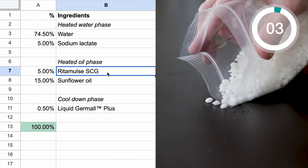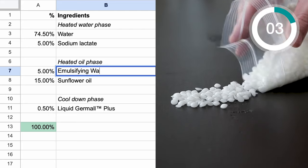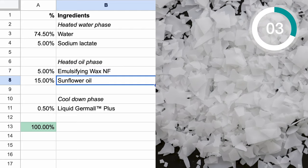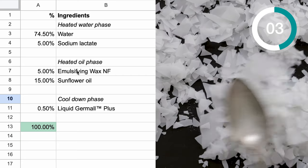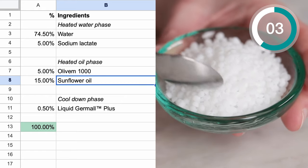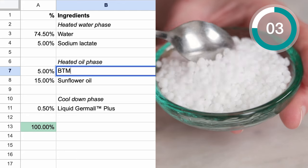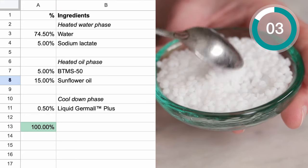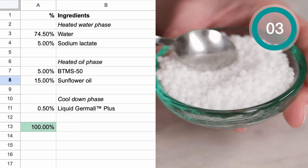This next change makes a lot of people nervous, but try a different emulsifying wax. I have found Emulsifying Wax NF, Olive M1000, Ritamulse SCG, Polawax, Montanov 68, BTMS 25, and BTMS 50 are generally pretty interchangeable on a one-for-one basis in most formulations. You will likely notice a change, but the emulsion shouldn't fail. I made a whole video on this, and I'll link it in the description box below if you'd like to learn more.